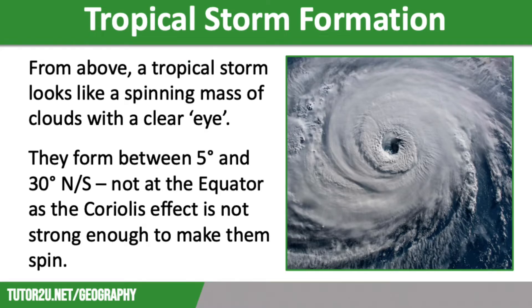As we mentioned in the previous video, a tropical storm is a spinning mass of cloud. Between 80 and 100 occur every year, and in order to be able to compare them we give them names. The first storm of the year usually starts with an A, then B and so on, and they alternate between male and female names. However, if a storm is completely devastating, with a high death toll for example, that name will not be used again. A good example of that would be Hurricane Katrina that struck New Orleans in 2005.